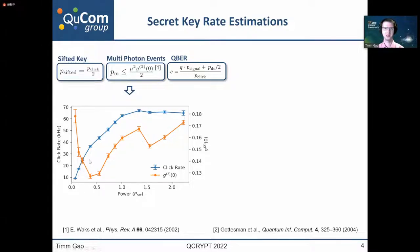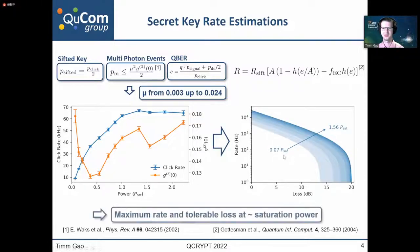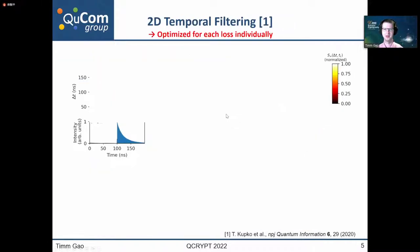From our experiment, we need to extract the click rate, the mean photon number into the quantum channel, our G2 of zero value, and the quantum bit error ratio in our system. Depending on the excitation power, we can achieve click rates at up to almost 70 kHz, and the G2 of zero as an indicator for the multi-photon emission probability goes down to 0.13. If we put these parameters now all into this asymptotic key rate equation, we can extract expectation values for secret key rates in full implementations. As we can see here, although the multi-photon emission probability increases with increasing excitation power, the overall extractable secret key rate is at the highest at almost saturation power due to the higher click rate. So far, we have not performed any optimization. However, if we look at the photon arrival time distribution...